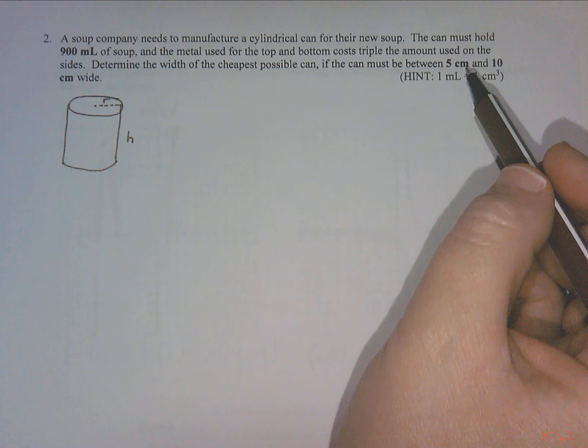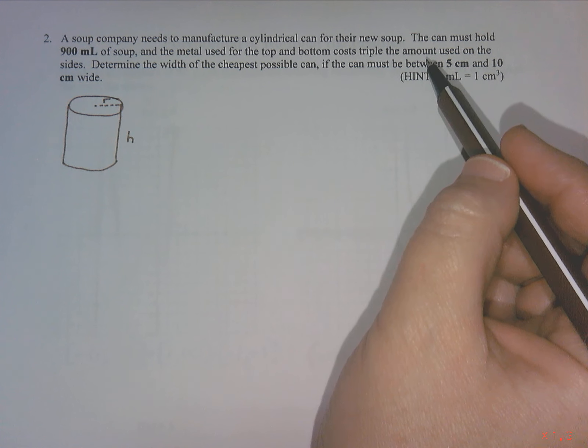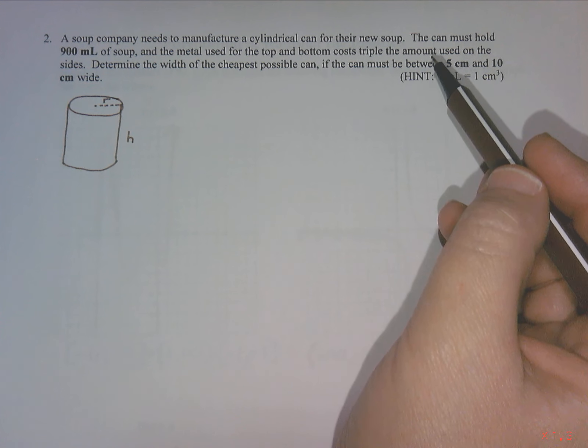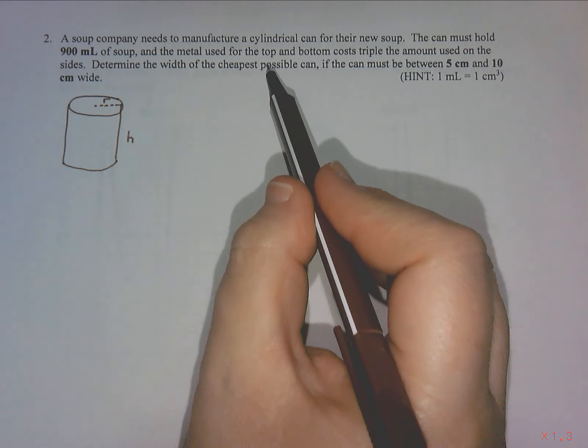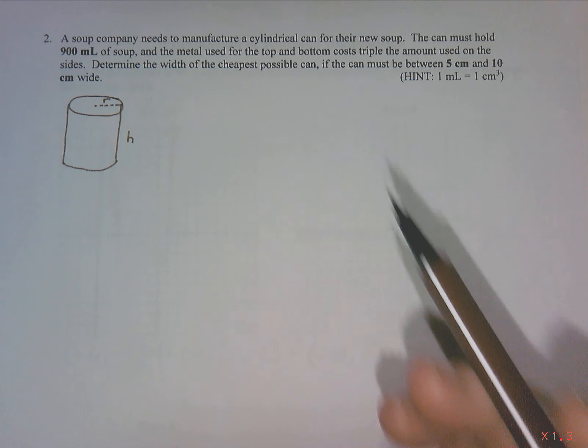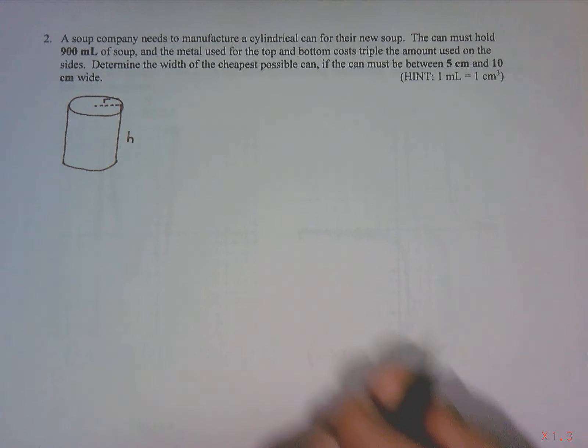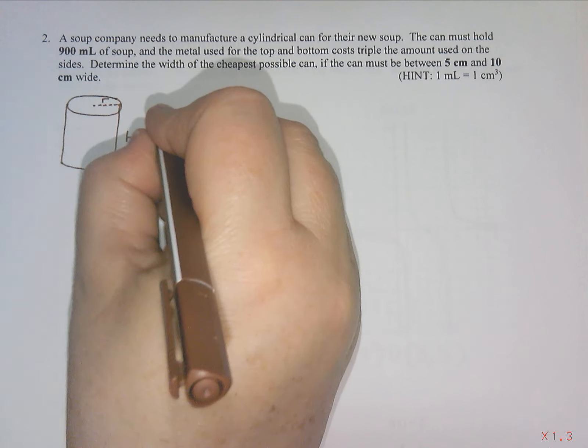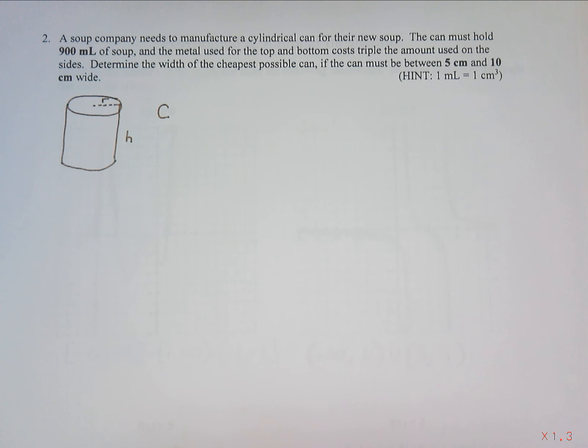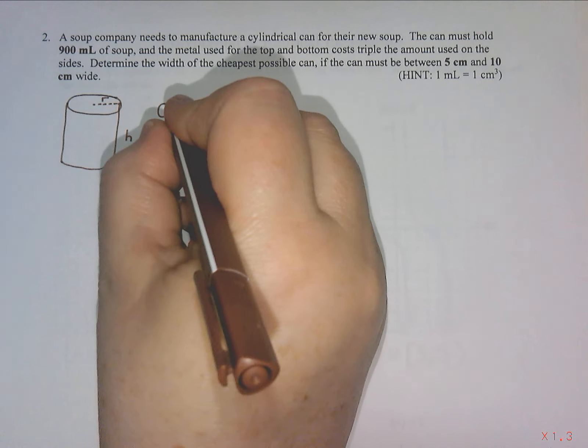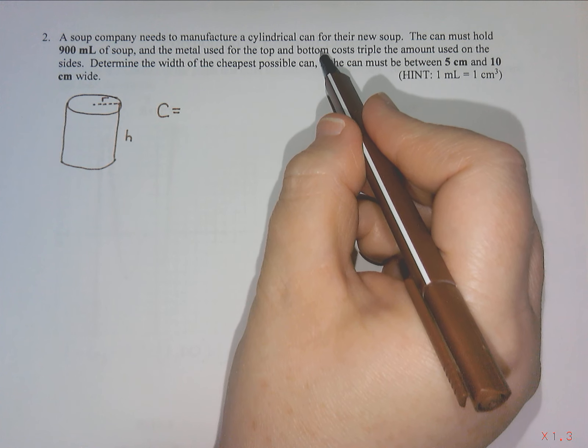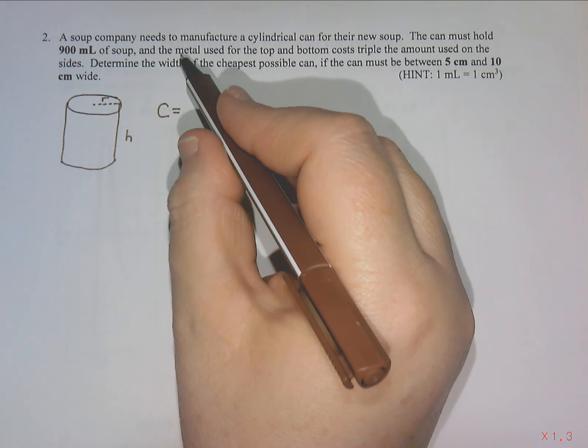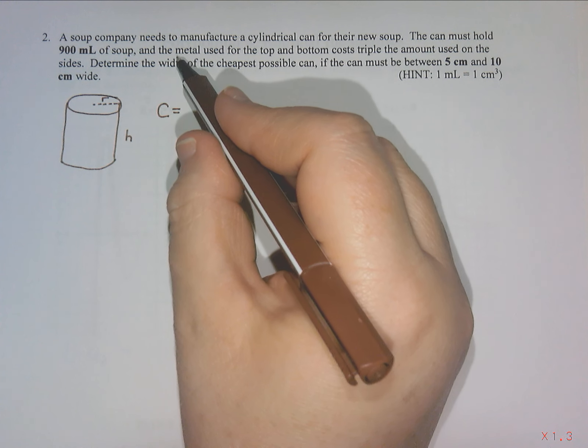It talks about the cost of the top and bottom being different. So first thing I'm going to do is try to set up an equation. It's asking me the cheapest possible can, so I am interested in cost. That's what we're trying to find, the lowest one.